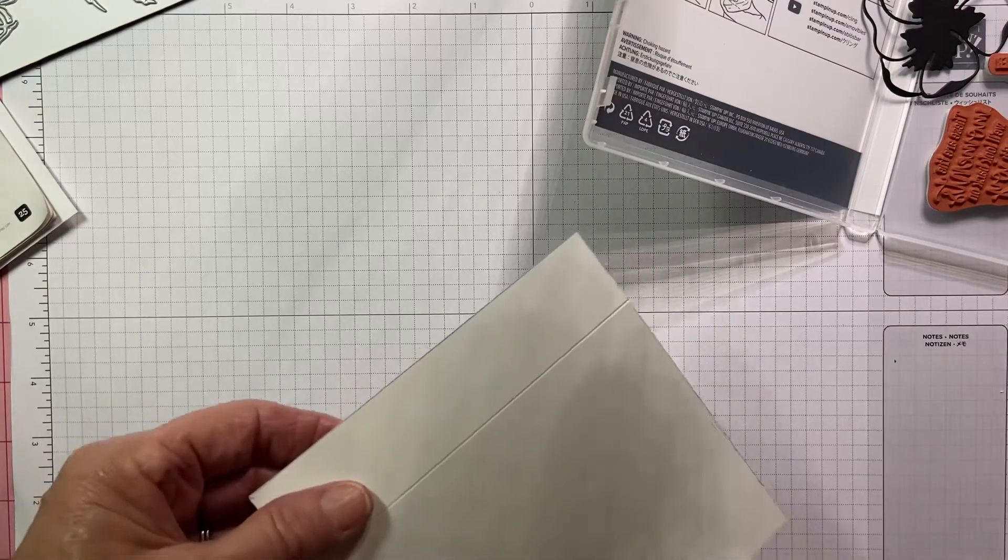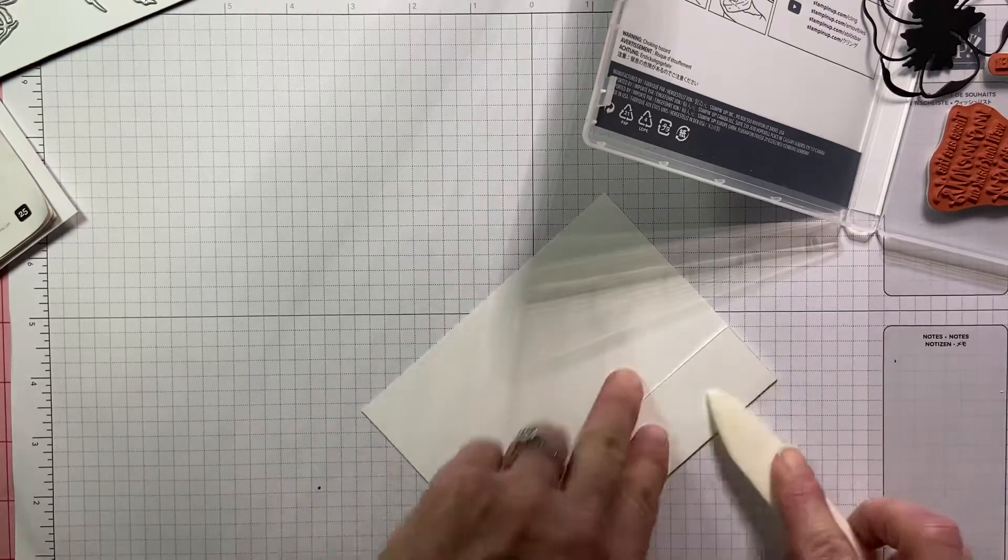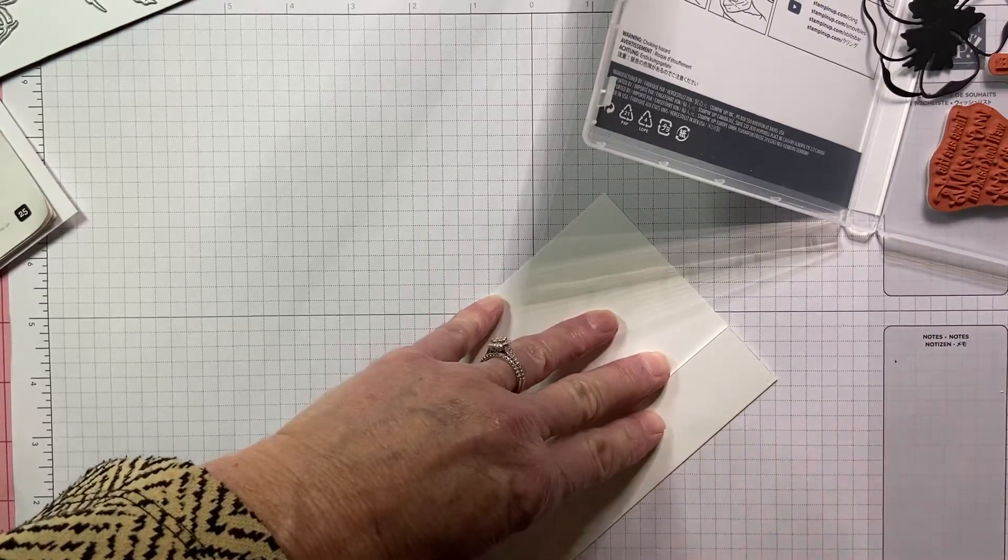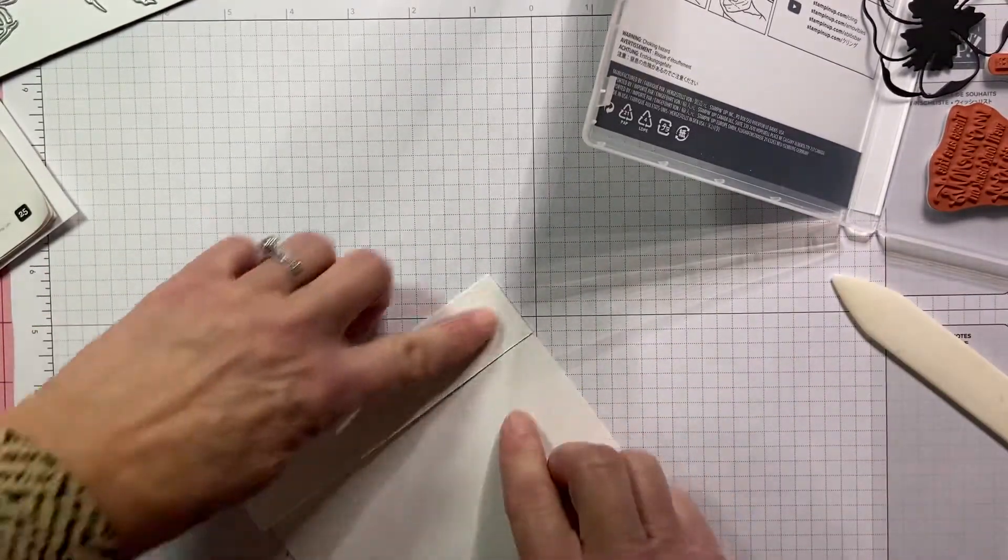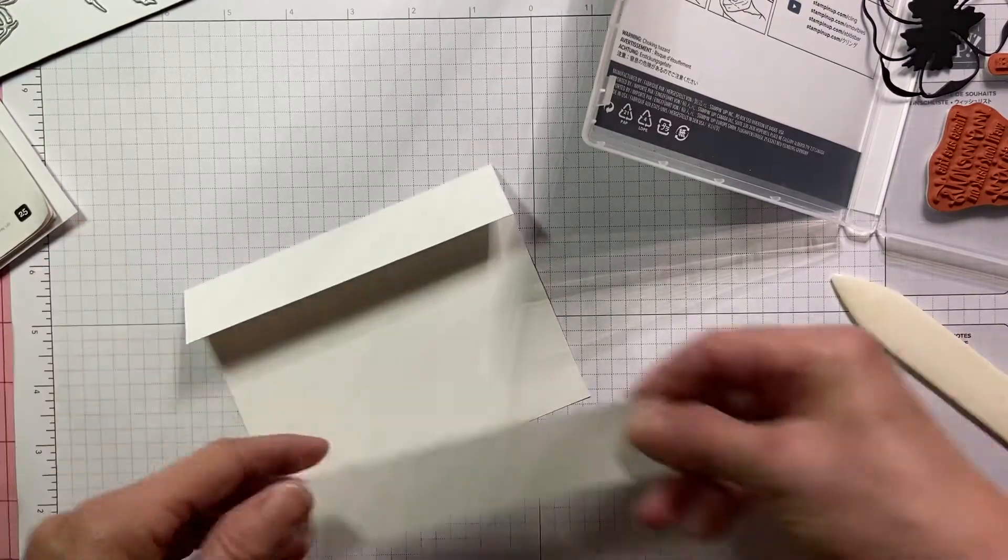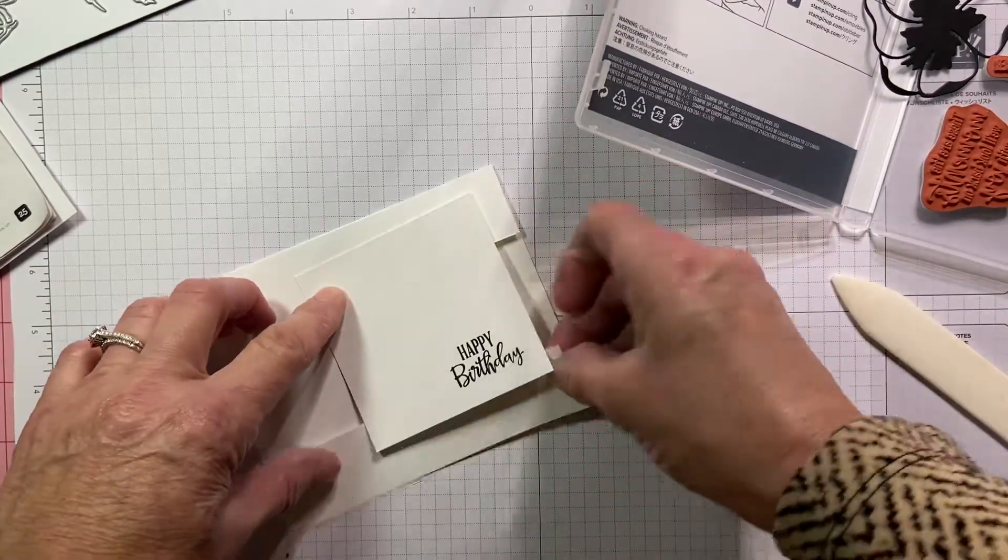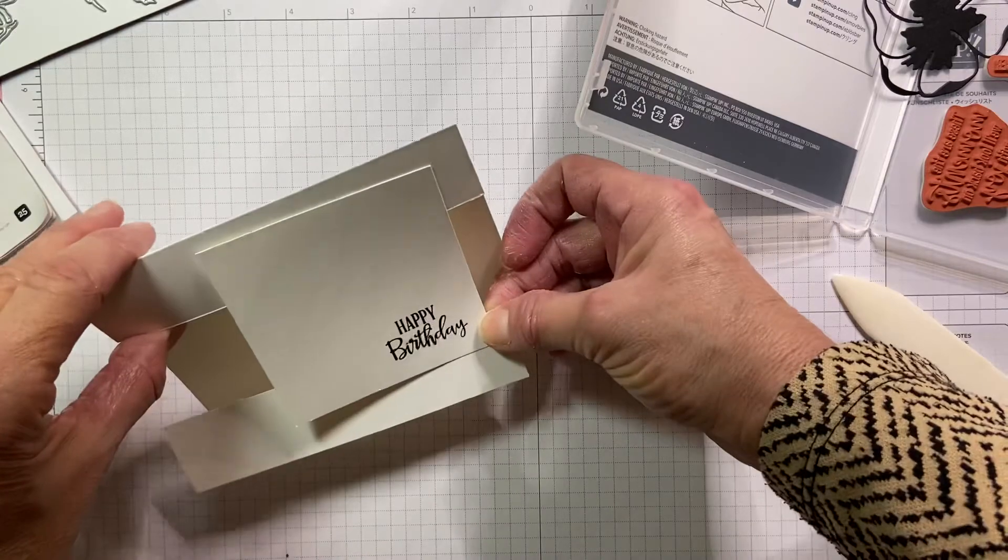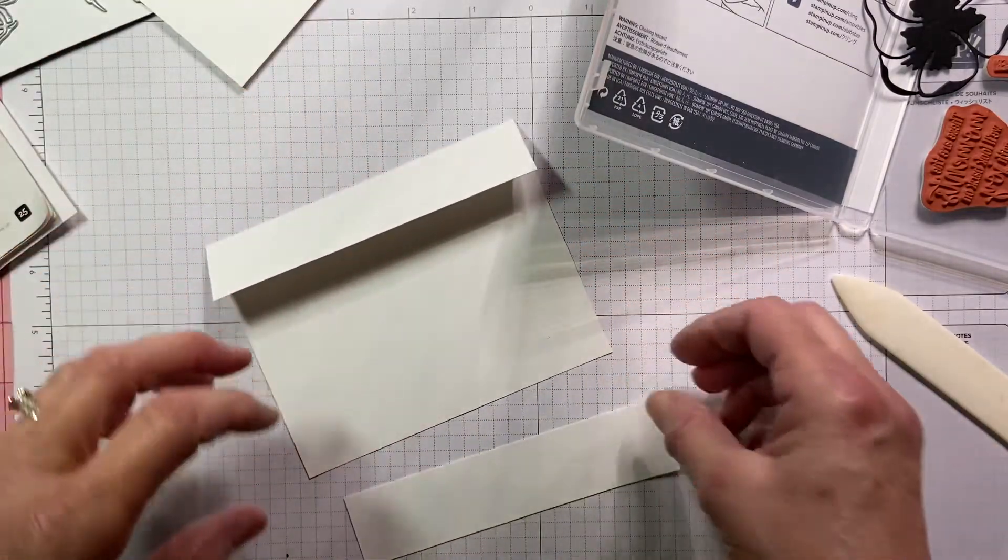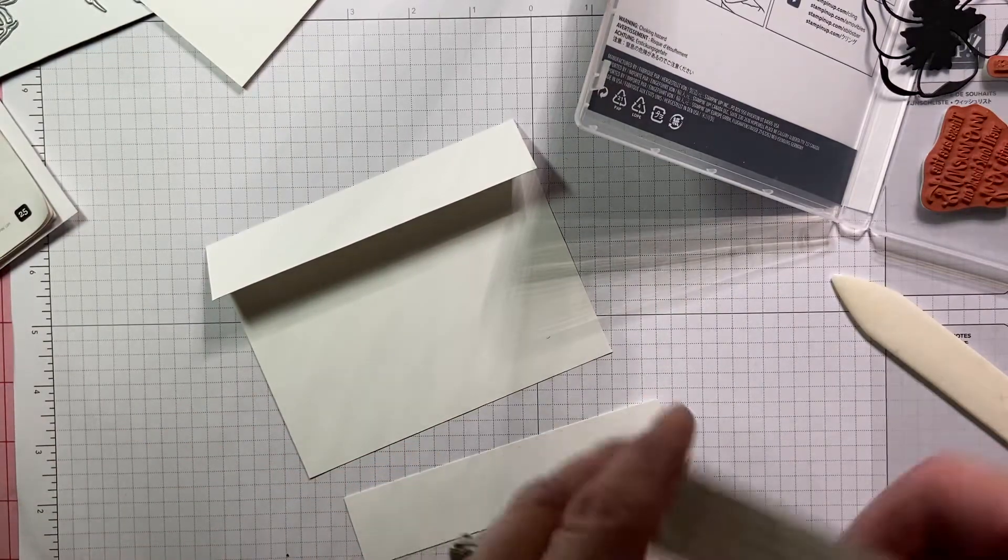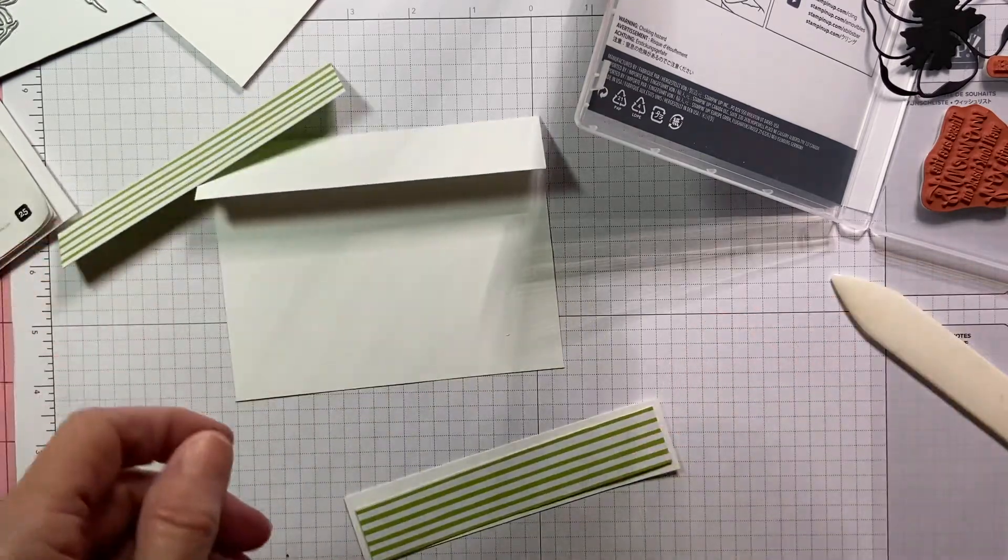What we'll do is fold our card base at that four and a quarter score line, and we'll just use our bone folder right there. That's going to be the inside of our card. This is the top of the card. This is going to be the bottom of the card. And this panel is going to attach the strip to the top like so. So let's get started on how we're going to actually decorate the card.